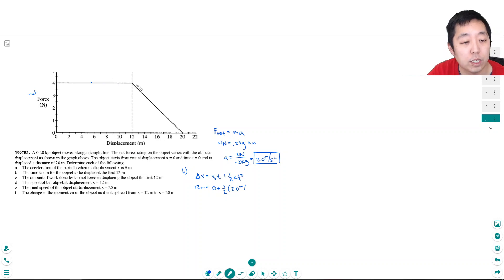So I just want to solve for t. I'm going to multiply by 2, divide by 20, and take the square root. So t is the square root of 24 meters divided by 20 meters per second squared, which equals 1.095 seconds.